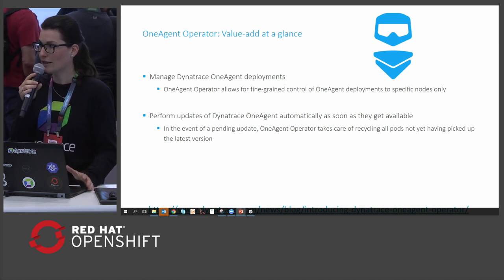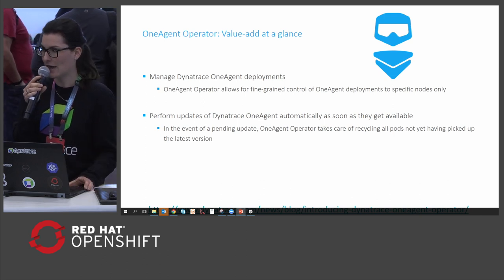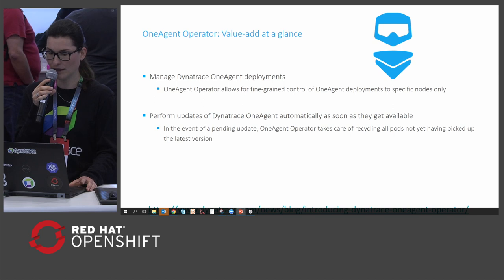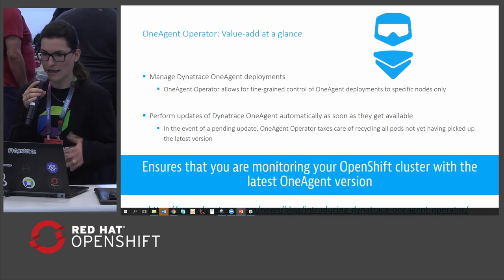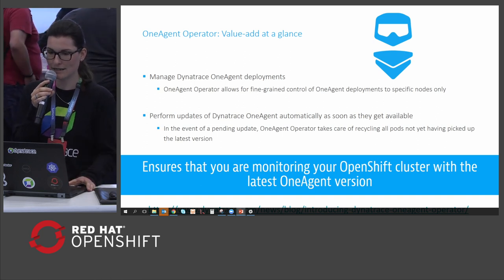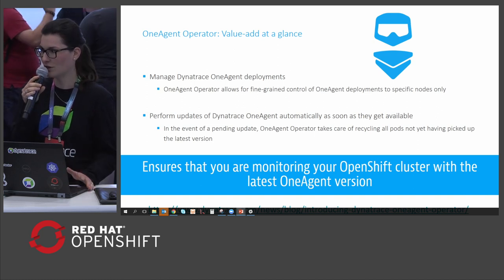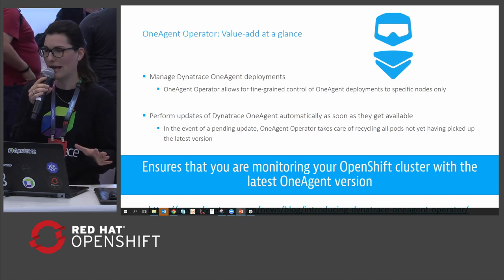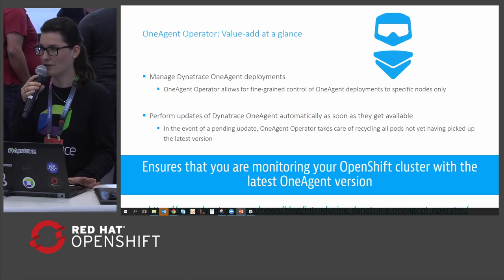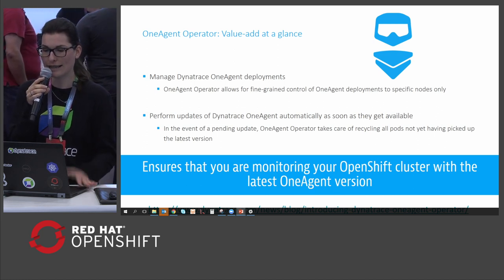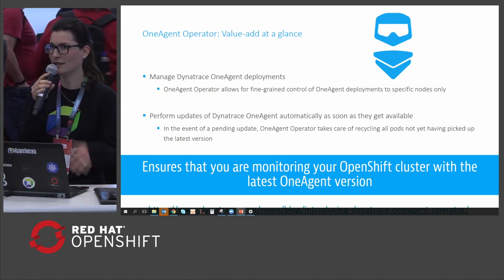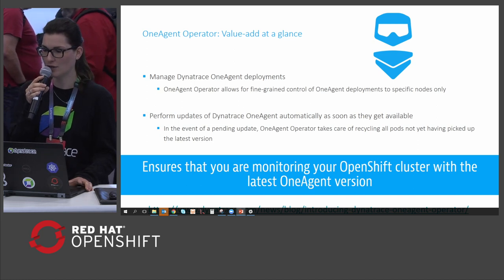A great value-add of the one agent operator is that it automatically updates the one agent as soon as a new version becomes available, ensuring your OpenShift cluster monitoring always runs the latest version. If you want to check out the one agent operator, we have a blog post online, and a GitHub repository where you can look at the source code and implementation, and start a discussion with us if you have further questions.